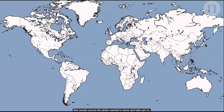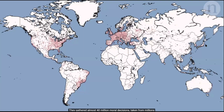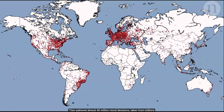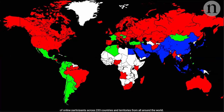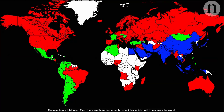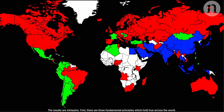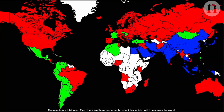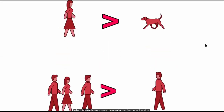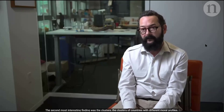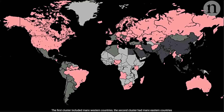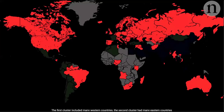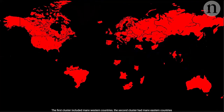They gathered almost 40 million moral decisions from millions of online participants across 233 countries and territories. The results are intriguing. There are three fundamental principles holding true across the world: save humans, save the greater number, save the kids. The second most interesting finding was the clusters — countries with different moral profiles. The first cluster included many Western countries, the second many Eastern countries, and the third countries from Latin America and former French colonies.